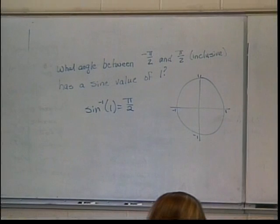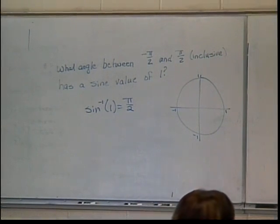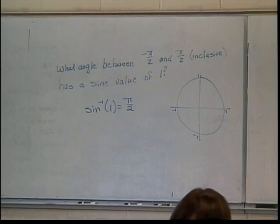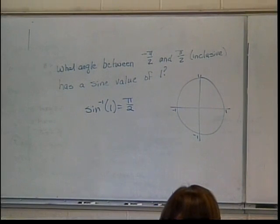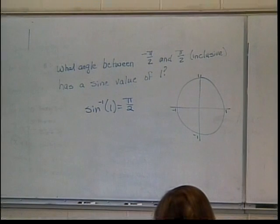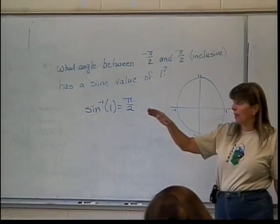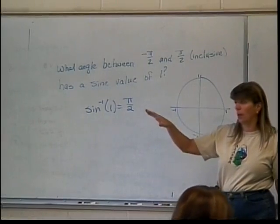So this is where knowing those values on your unit circle are going to be helpful. Now, how many of you have unit circles with negative angles on them? Not very many. So we'll have to deal with that here. So for this one, I'm asking for sine inverse of negative 1 half.